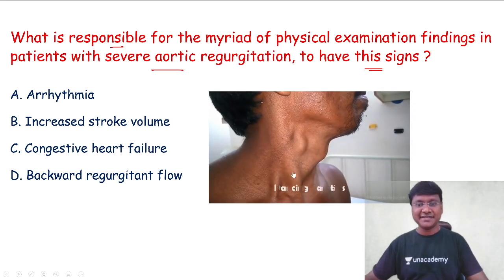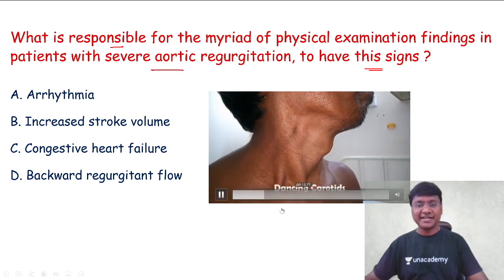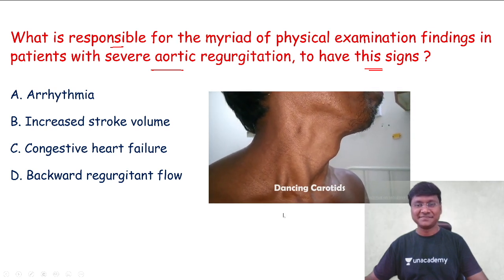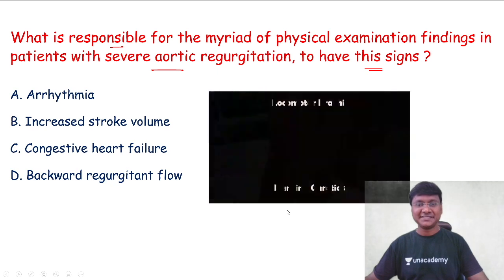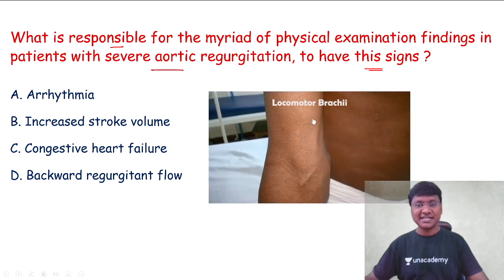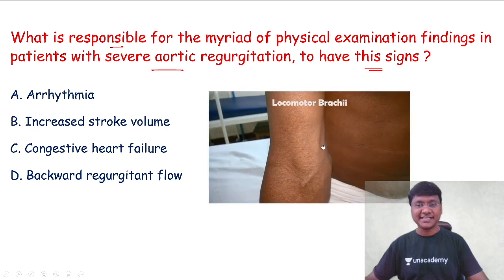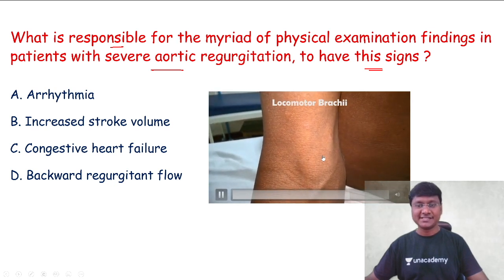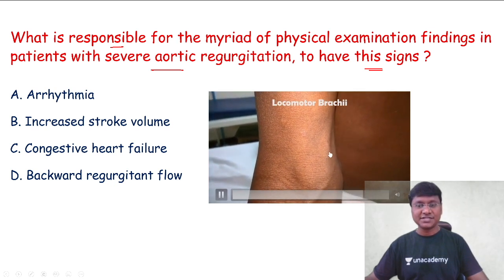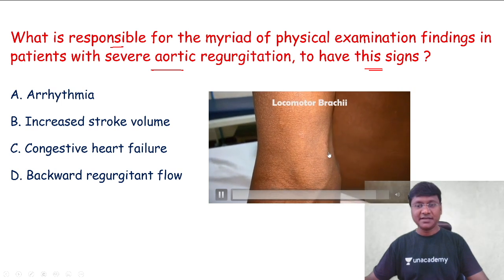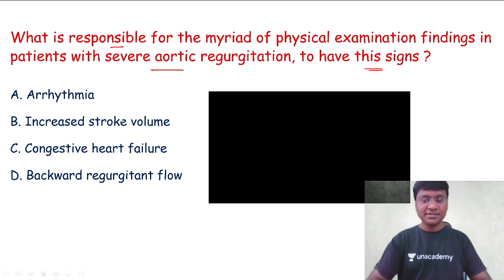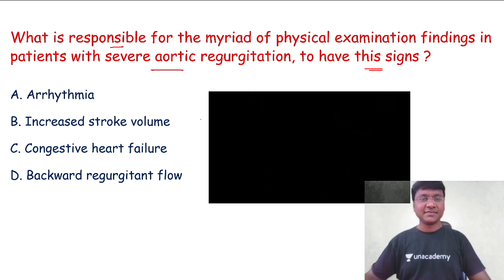You can observe that it has been given to you as the dancing carotids. This is another important sign — that is locomotor brachialis. You can observe the pulsations which are present over the brachial artery. The question is about what is the mechanism for the development of these particular signs.